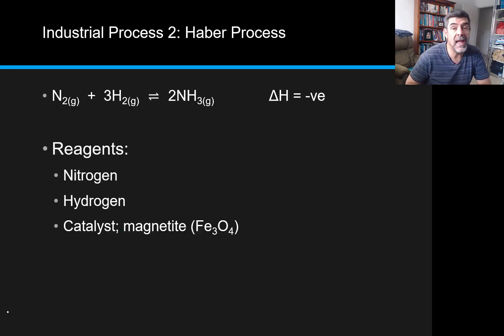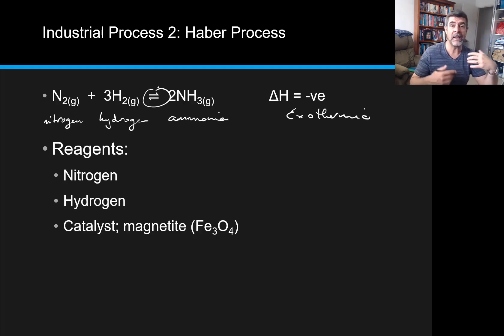Probably the best one to look at when we're talking about reaction conditions is the Haber process. This is a process in which nitrogen and hydrogen are combined to form ammonia. This is one that we're a little bit familiar with. It's an exothermic reaction in the forward direction. It's also an equilibrium system.